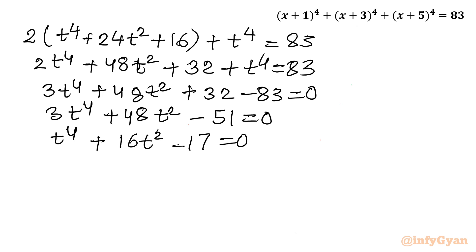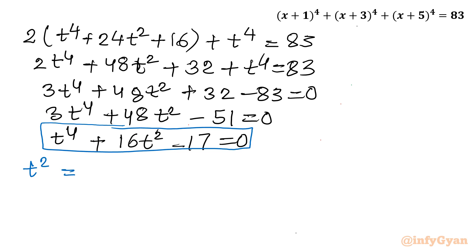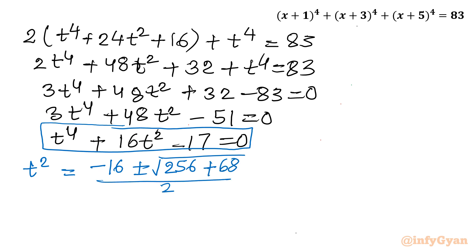Now let us use the quadratic formula — factorization is also an option. This is a quadratic equation in t². Applying the quadratic formula: t² = (−16 ± √(256 + 68)) / 2 = (−16 ± √324) / 2.